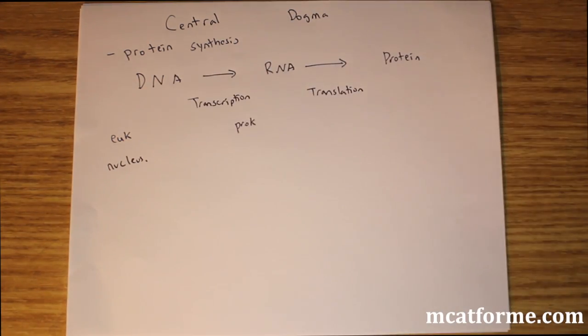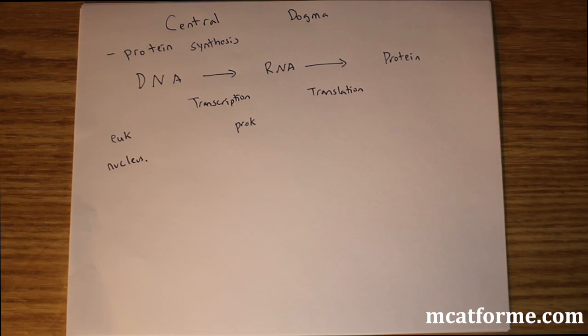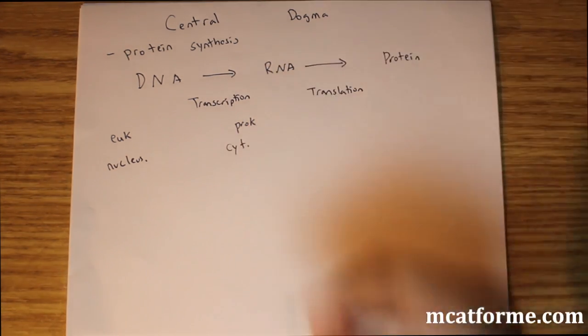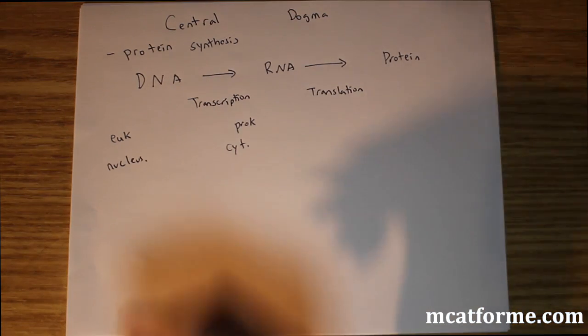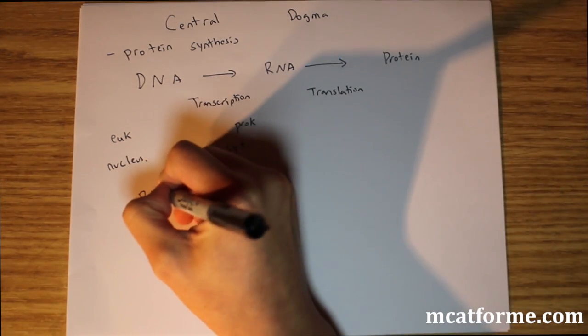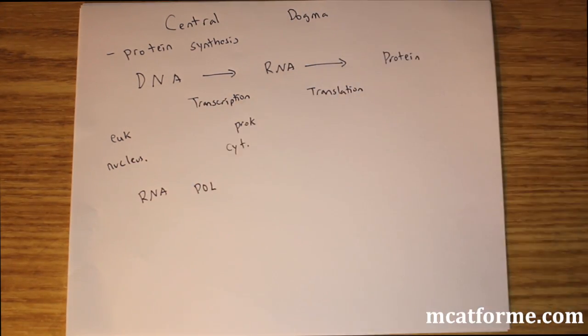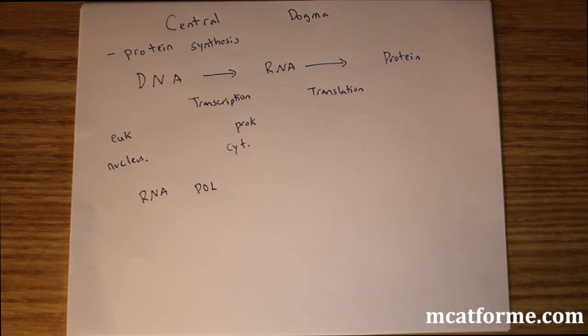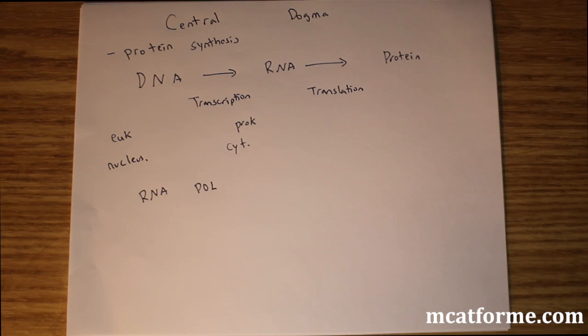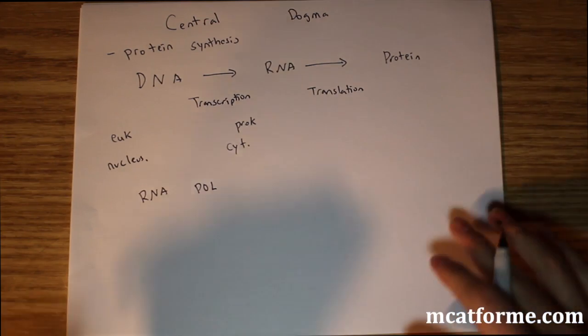And that's only for eukaryotes. But the same thing goes for prokaryotes. It's going to happen in the same place where DNA is located, but there is no nucleus so it's going to be in the cytoplasm. So what does this? RNA polymerase does this, and this is an enzyme similar to DNA polymerase where it will lay down the tracks. It will convert DNA into RNA. And we'll see exactly what the difference between DNA and RNA is.